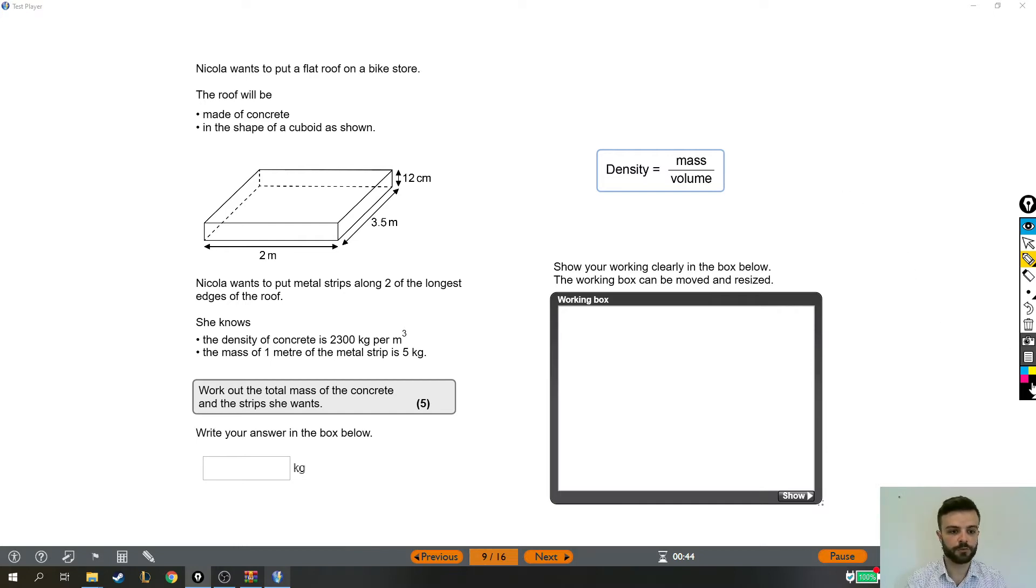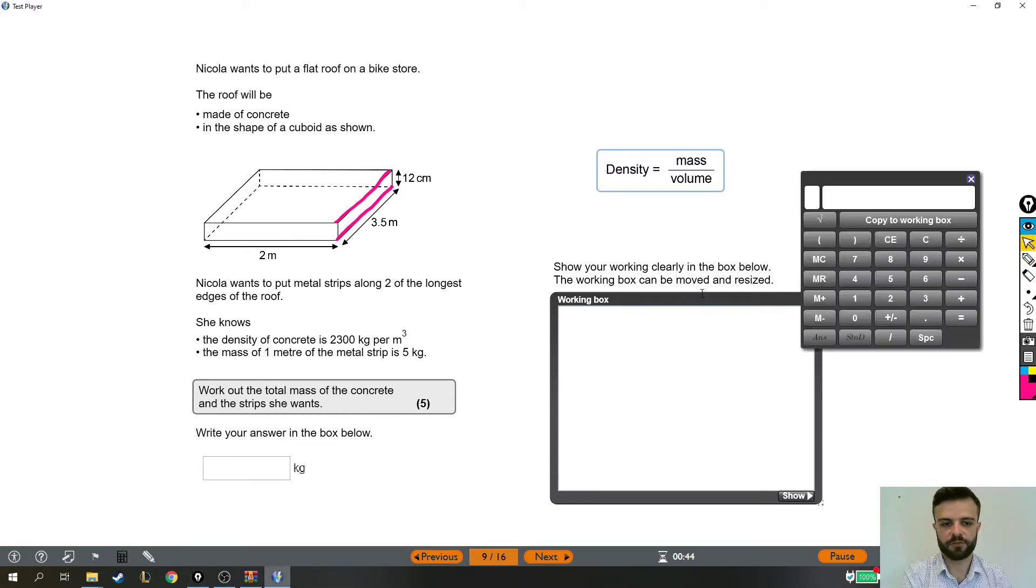Okay, the first very doable bit that we can do is to work out how much the metal strips weigh. So the metal strips go along two of the longest edges of the roof. This is the longest edge of the roof and there are four edges that are that length. It doesn't matter which two, but two of them are going to have this metal strip. So altogether we are going to need two lots of 3.5. We are going to need seven meters of the metal strip.